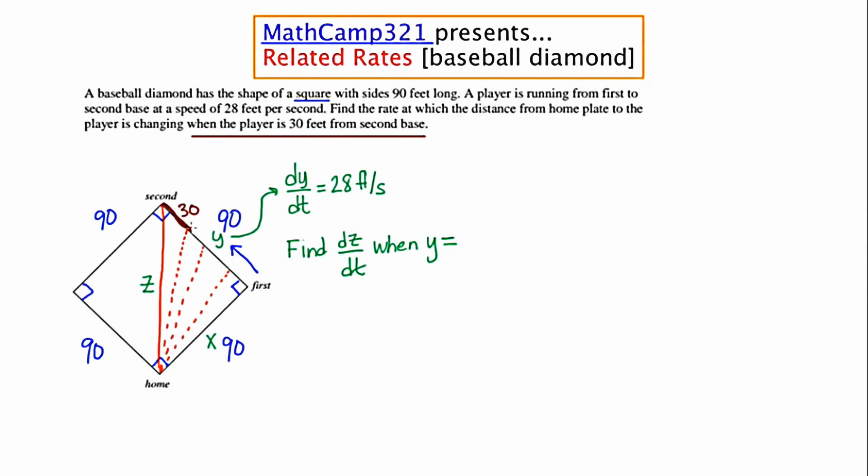If the runner is 30 feet from second base what does that mean about the distance that the runner has already run? Well the conclusion would be that the runner has run 60 feet at this point. So we're trying to find the rate of change of the hypotenuse when the player is 30 feet from the base which means that he has gone 60 feet. So let's set up the Pythagorean theorem.